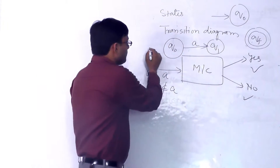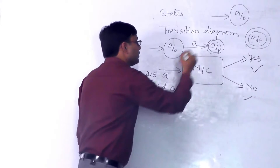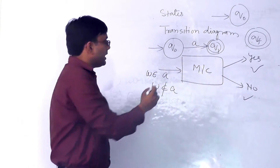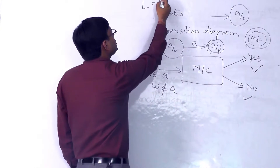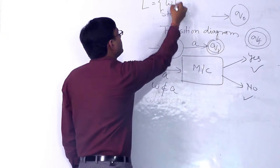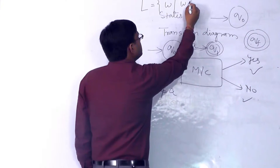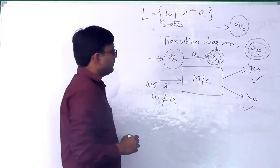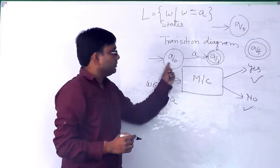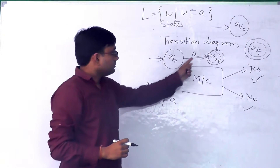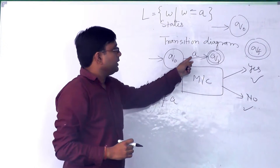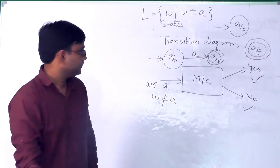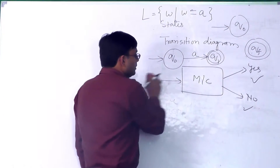In the transition diagram, the start state is represented by an arrow convention and the final state is represented by a double circle. So for designing a machine that accepts 'a', we start from start state q0 and after giving input 'a' it reaches state q1.